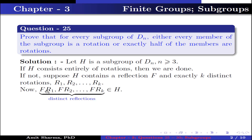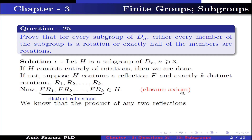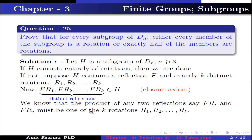Now f·r₁, f·r₂, up to f·rₖ are distinct reflections belonging to H, by the closure axiom. We know that the product of any two reflections, say f·rᵢ and f·rⱼ, must be one of the k rotations r₁, r₂, up to rₖ, because H contains only k rotations.